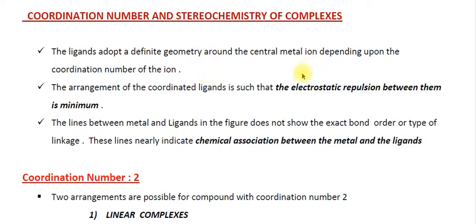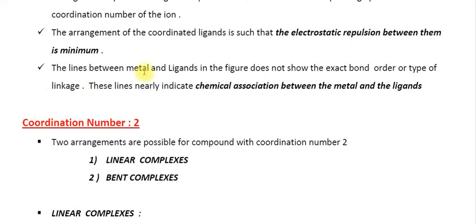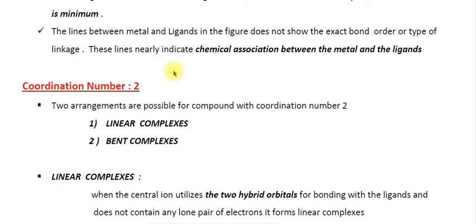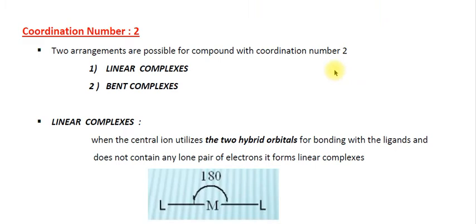The arrangement of the coordinated ligands is such that the electrostatic repulsion between the ligands is minimum — that is the main factor here. The lines shown between the metal and ligands in the figures do not show exactly the bond order or the type of linkage, but are nearly indicating the chemical association between the metal and the ligands.